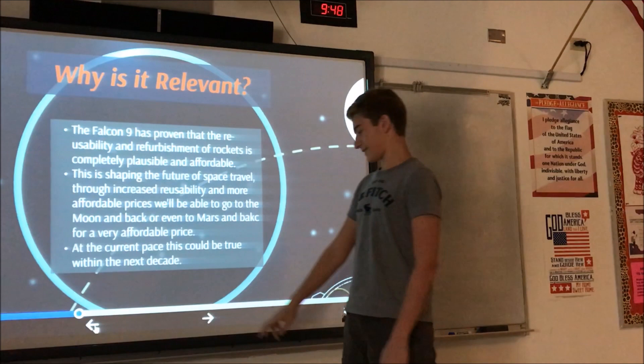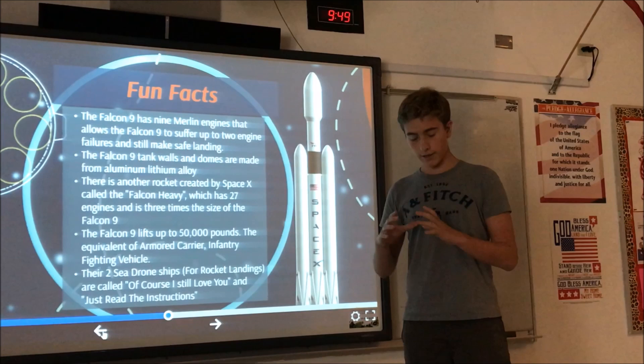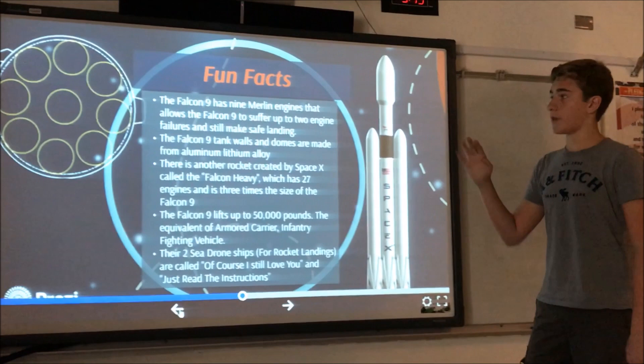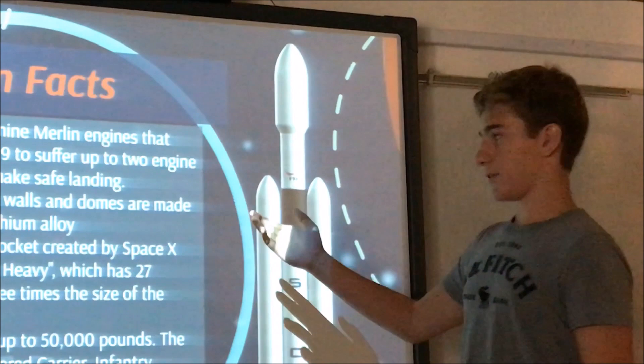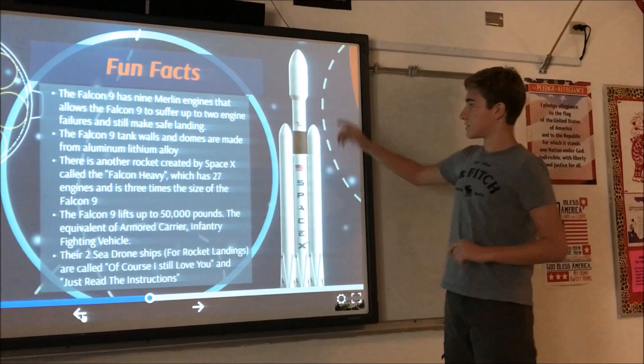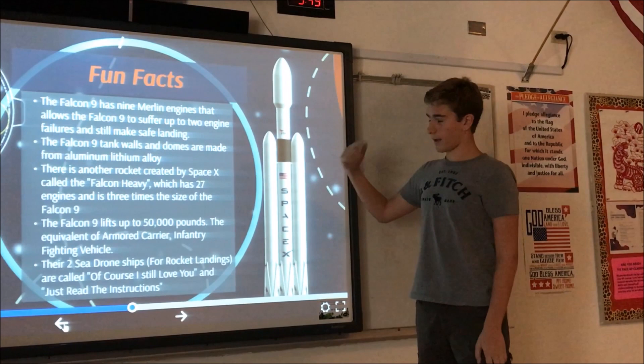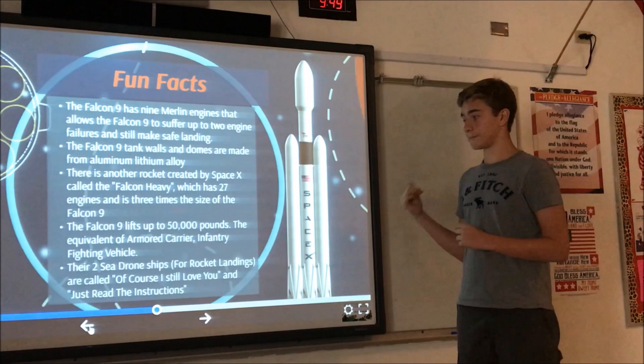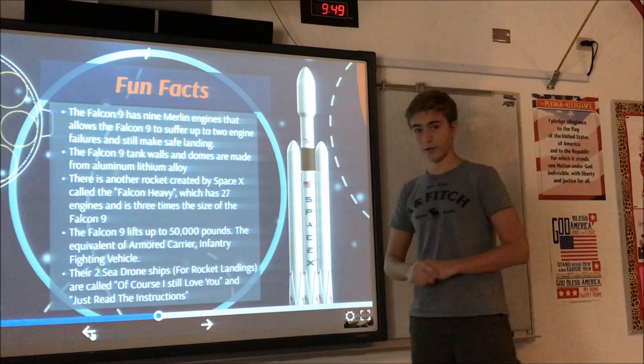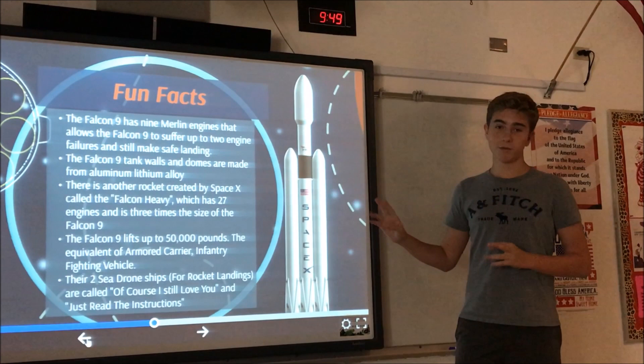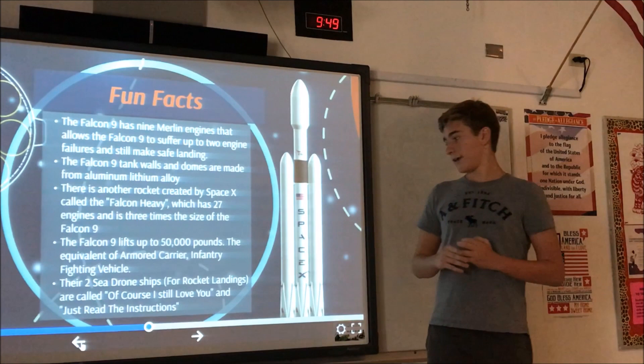The Falcon 9 has 9 Merlin engines and they did that so it's kind of like this, this is the setup. So up to 2 and sometimes even 3 engines can fail and it can land safely wherever. The Falcon 9 has an aluminum lithium alloy tank, but that's not really important. And this is another model, which is called the Falcon Heavy. It can lift up to 150,000 pounds for heavier satellites. The Falcon 9 can lift up to 50,000 pounds, which is an armored carrier tank. And sometimes they land on the sea drum. There's two different names, which is, of course, this will love you and just read the instructions, which is a play on. And yeah, they land automatically in the sea. There's a video that shows it towards the end, which is pretty interesting.